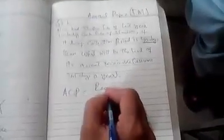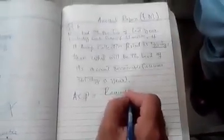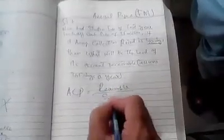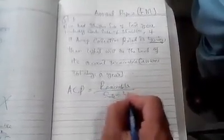Okay, so we know that average collection period is equal to receivable divided by sale divided by 365.